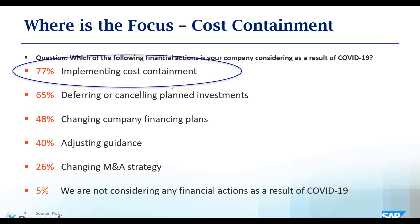Another area they talked about is implementing cost containment, which can include things like looking at how you manage leases and lease costs, how you look at general administrative costs, and other areas — really dialing in on what are the real costs and profitability of your products and the solutions that you offer. And that's why I thought this would be really interesting for everybody here.